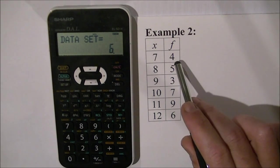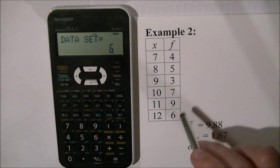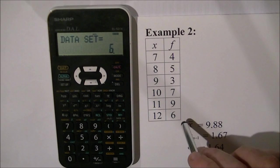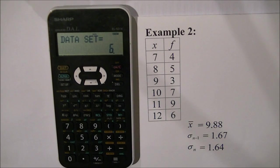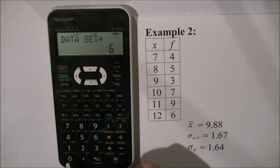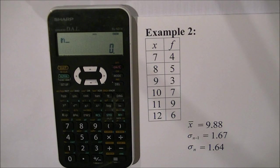Now I have actually entered in 34 different scores. Just to show you that there are 34 scores in there, I'm going to press the alpha button and the zero key and it comes up with the letter N which stands for number of scores. I press equals and it tells me that there are 34 scores entered into the calculator.